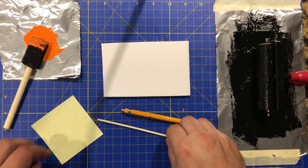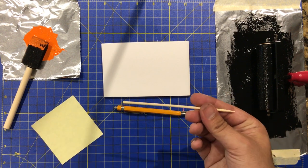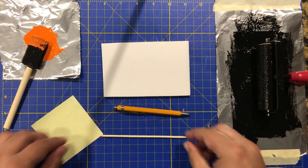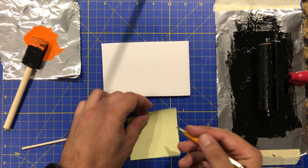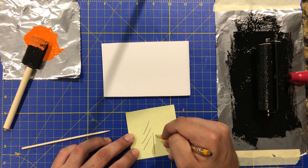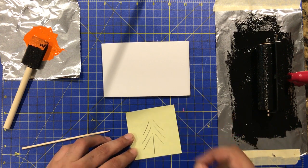So let's make a tree. Also on there I have a pencil and a barbecue skewer, bamboo skewer. It works out really well to help draw the lines. So let's draw our picture. We'll make a tree. Something simple.